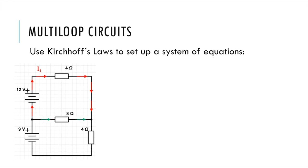We guessed in the middle section the current was going to the right, we called it I2, and we guessed in the bottom that the current was moving also clockwise, called it I3. Remember it doesn't matter if your guess is right or wrong as long as you are identifying the different spots where current can be different in any section in series. So as soon as you see a junction you have a new current. So these are the three currents.